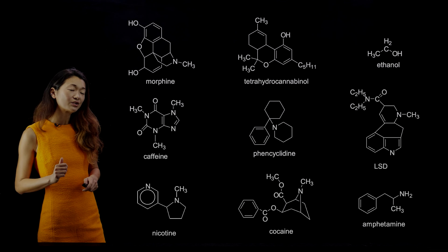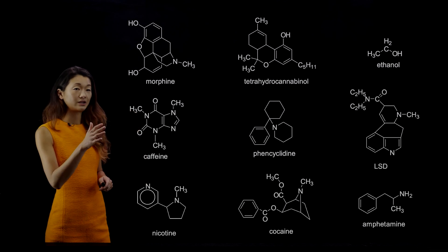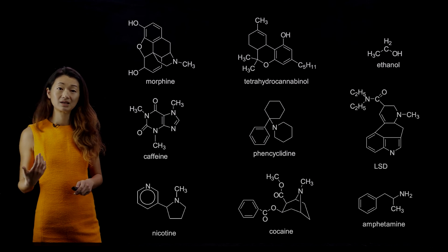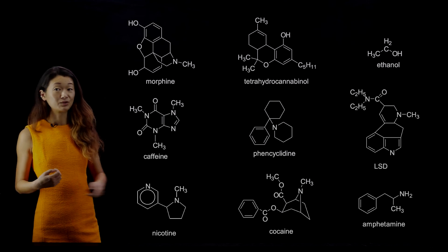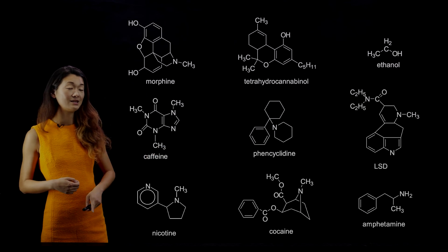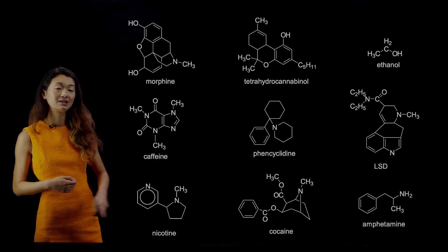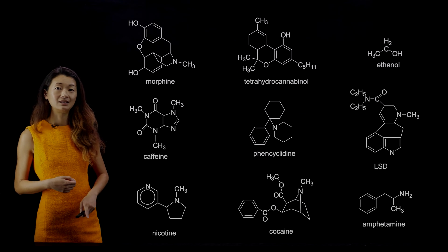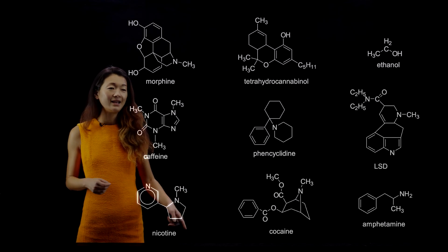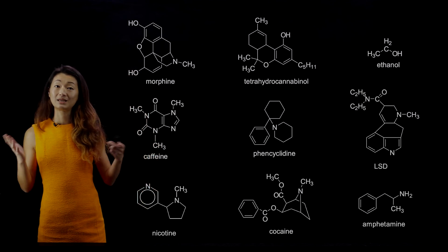These are the drugs that we're going to be talking about today: morphine, tetrahydrocannabinol (THC), ethanol (which is the alcohol we drink), caffeine (which I am currently on right now, which is why I'm talking so fast), phencyclidine (PCP), LSD (lysergic acid diethylamide, which is a hallucinogen), nicotine (found in cigarettes), cocaine, and amphetamines, which are a class of molecules also known as speed.